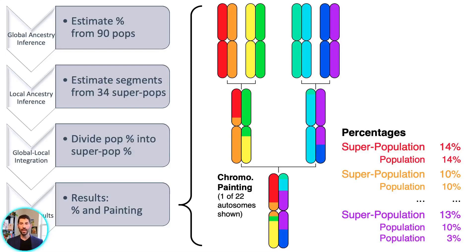For example, here's a hypothetical family tree with four grandparents, two parents, and you. We're keeping only chromosome one for simplicity, but keep in mind the chromosome painting includes all 22 autosomes — everything but your X, Y if you're male, and your mitochondrial DNA. Due to random genetic recombination, let's say you inherit 13% purple ancestry from your dad's dad — purple being a superpopulation. Your percentages might then be broken down further into, say, 10% and 3% at the population level.